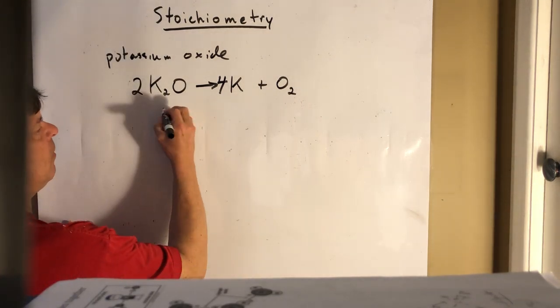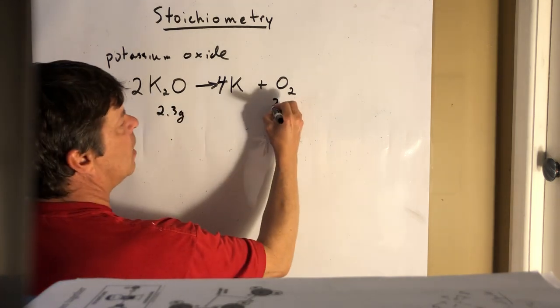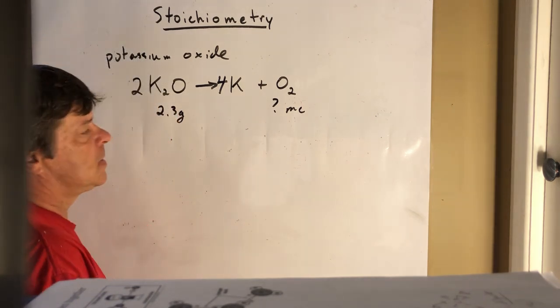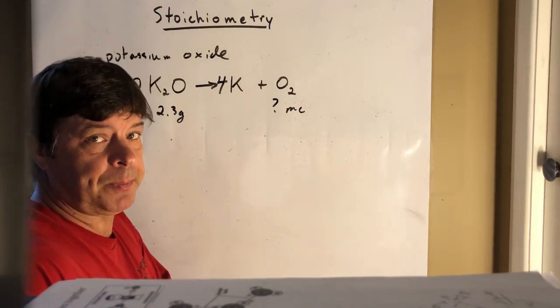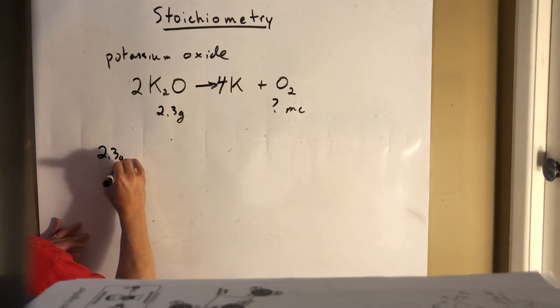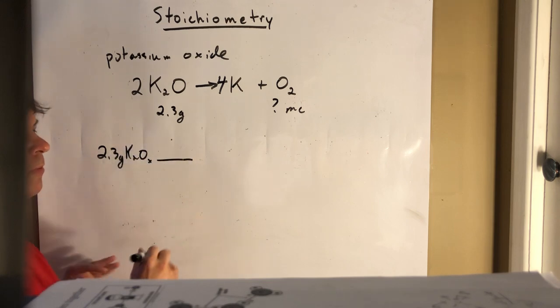All right, so let's say we have 2.3 grams of potassium oxide and we want to figure out how many molecules of oxygen. So again, we start with what's given. So there's 2.3 grams of potassium oxide. You want to convert that to moles.